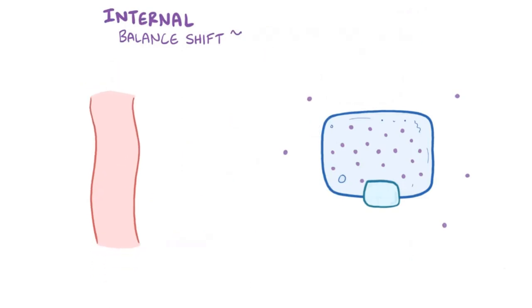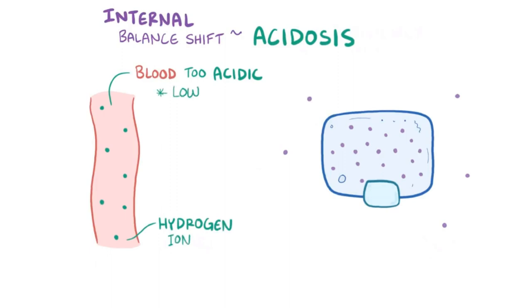Another cause of an internal potassium balance shift could be an acidosis, which is when the blood becomes too acidic. In other words, there is a higher concentration of hydrogen ions, which means a lower blood pH. One way the body can increase the blood pH is by moving hydrogen ions out of the blood and into cells. To accomplish this, cells use a special ion transporter that exchanges the hydrogen ion for a potassium ion across the cell membrane. So in order to help compensate for an acidosis, hydrogen ions enter cells and potassium ions leave the cells and enter the blood, which might help with the acidosis but results in hyperkalemia.